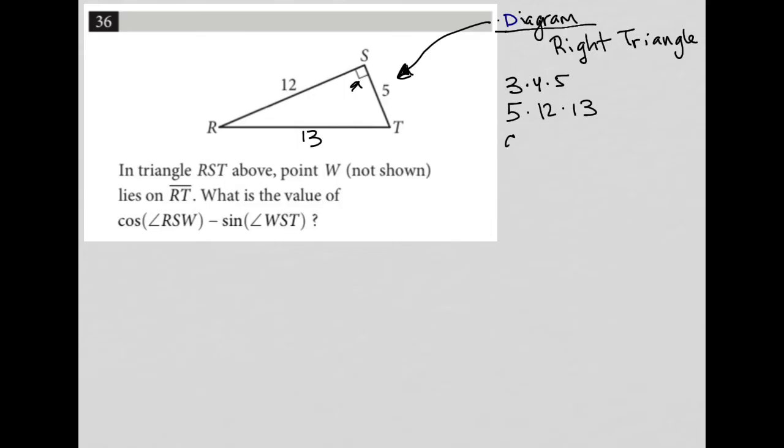We also should be aware that Pythagorean theorem works for this, so a² + b² = c². If you didn't know this special right triangle ratio, you can definitely use the Pythagorean theorem and solve for c to get the 13 here.